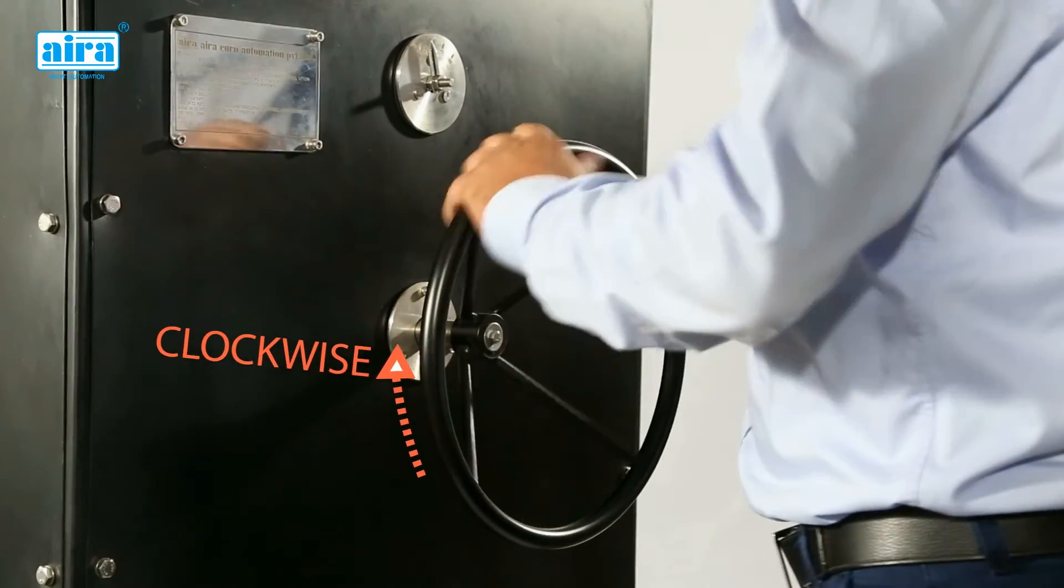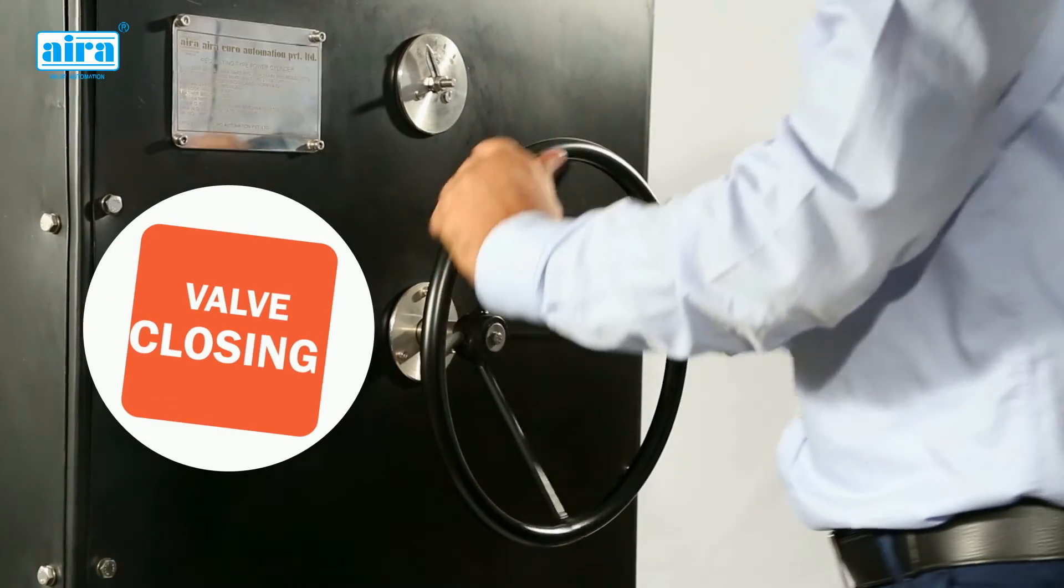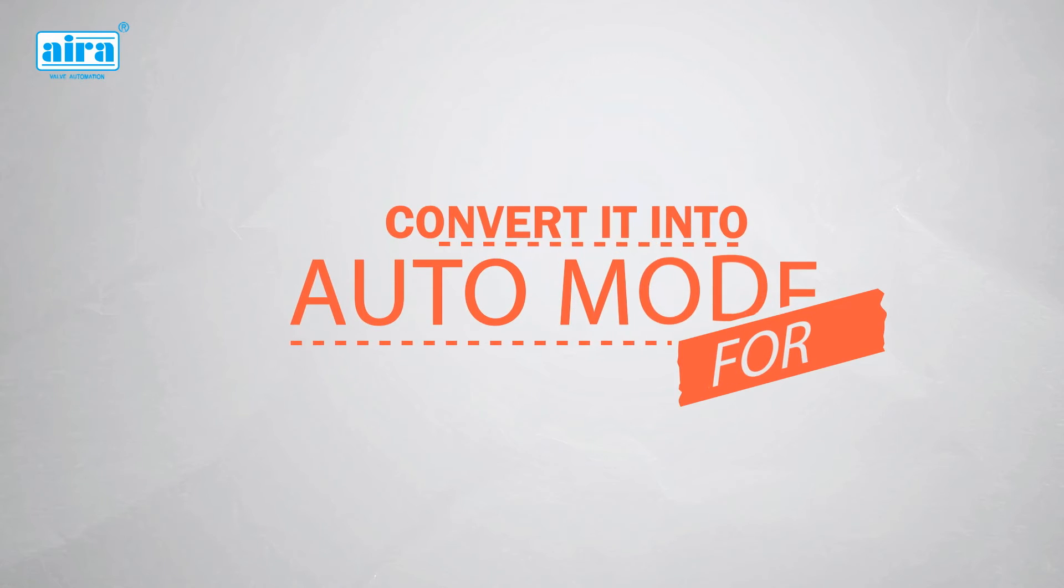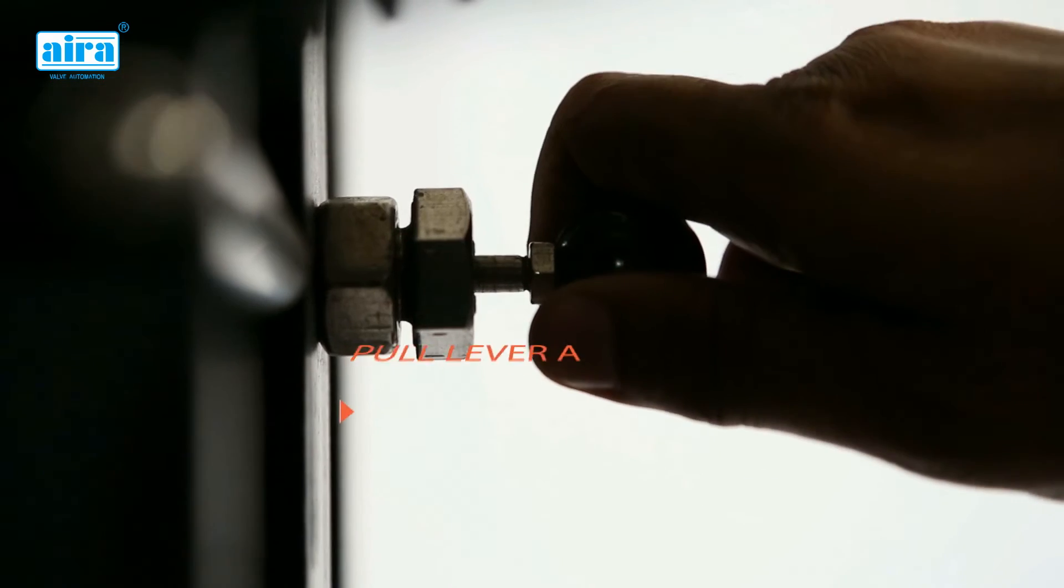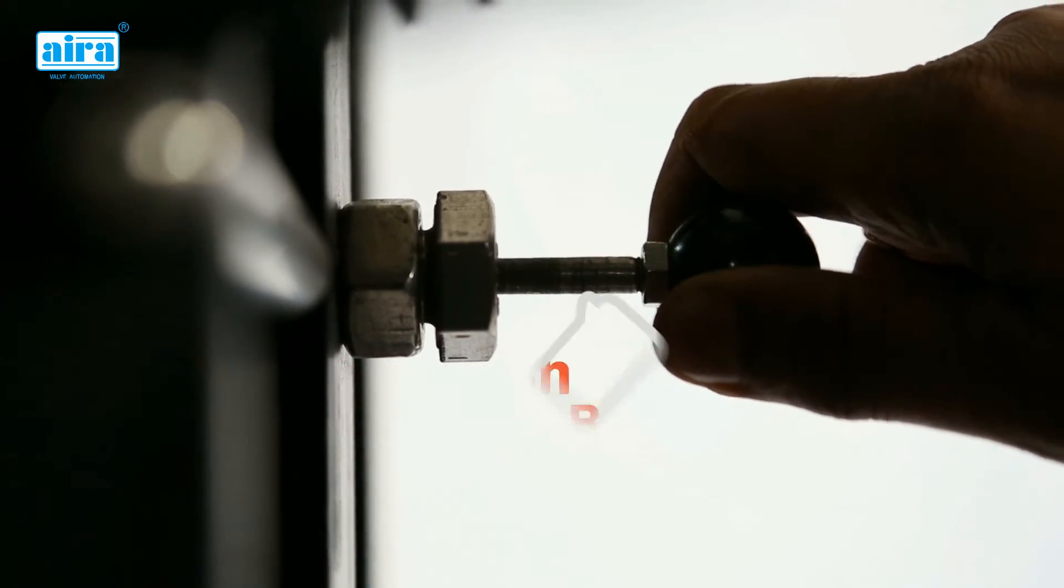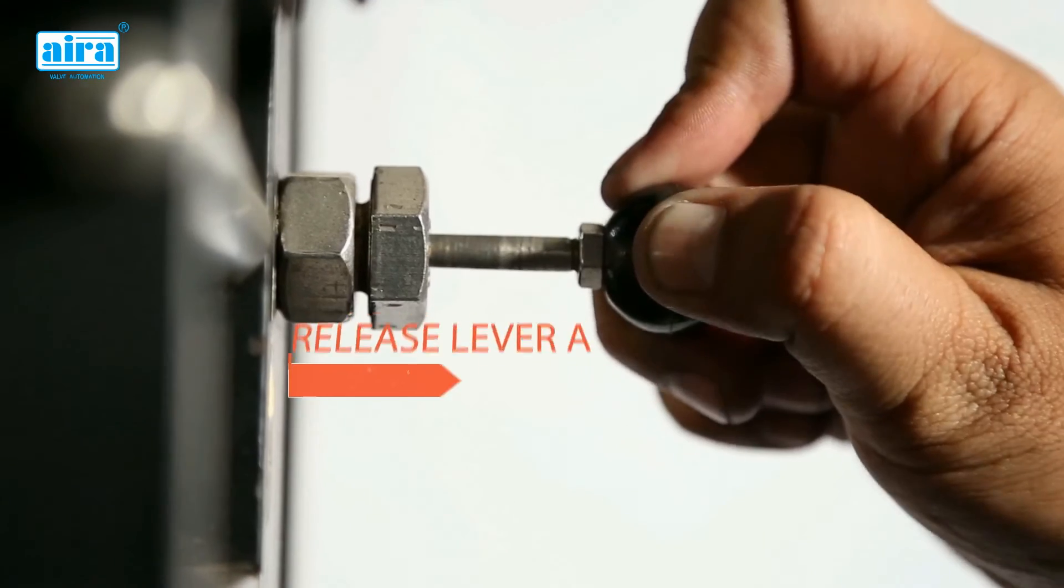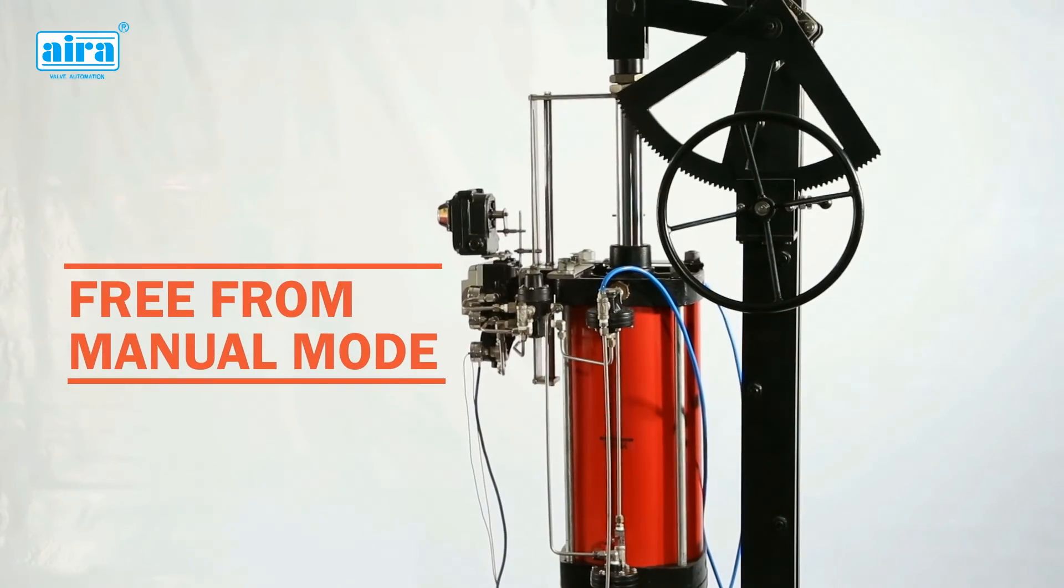You can operate hand wheel clockwise for closing the RPC and anti-clockwise for opening it. If you wish to convert it again into auto mode, you need to pull lever A again and engage the clutch by pushing lever B with hand wheel and then release lever A to make it free from manual mode.